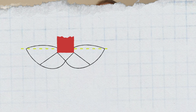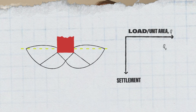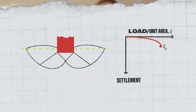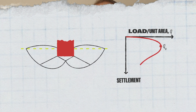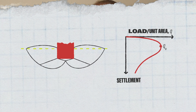In general shear failure, when the load applied to the soil by the foundation increases, the settlement will increase as well. When the load per unit area equals the ultimate bearing capacity value — Q-U — the soil fails, causing bulging around the soil footing. You never want that, as it happens on one side only, which leads to tilting of the structure.